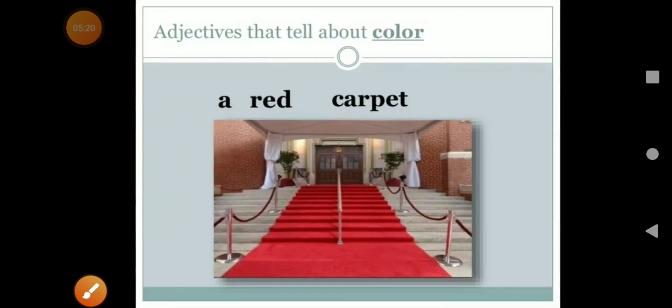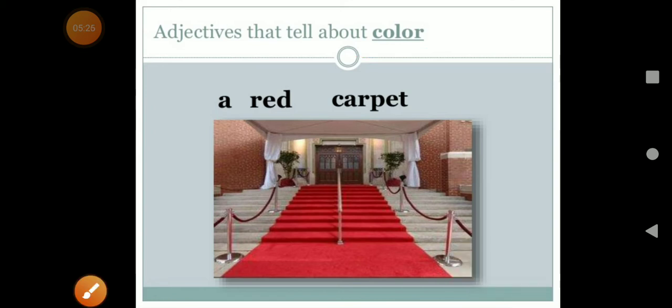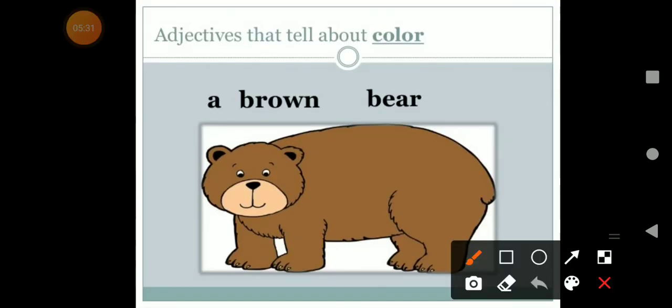In the next picture, it will tell us about the color. Like, carpet is a noun and red is an adjective. In the next picture, bear is a noun and brown is an adjective.